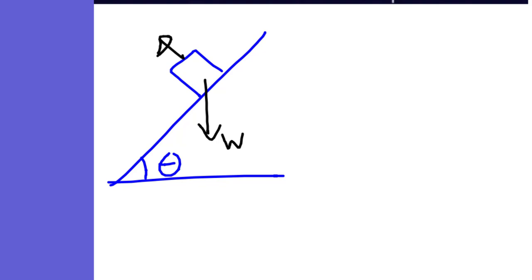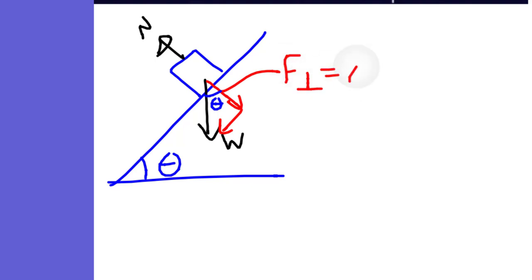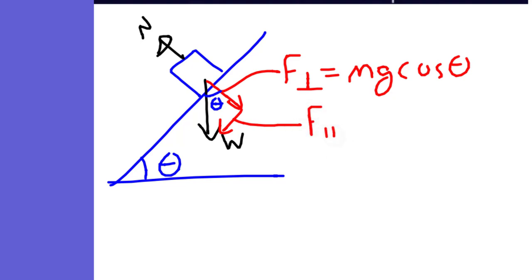This weight is going to be affected by the angle it is on, so we have to split it up into x's and y's. The angle of the banked curve is the same geometrically as the angle of this small triangle. What we call the force perpendicular is going to be equal to mg cosine of theta, whereas the force parallel is equal to mg sine of theta.